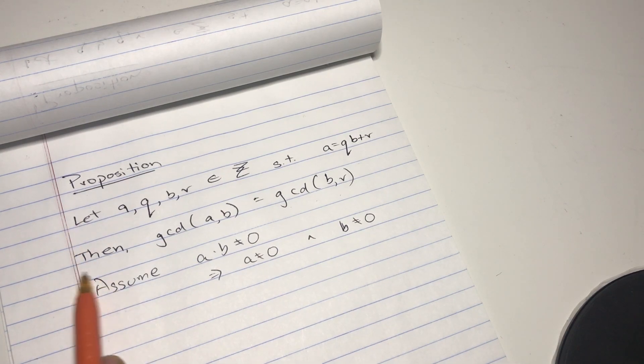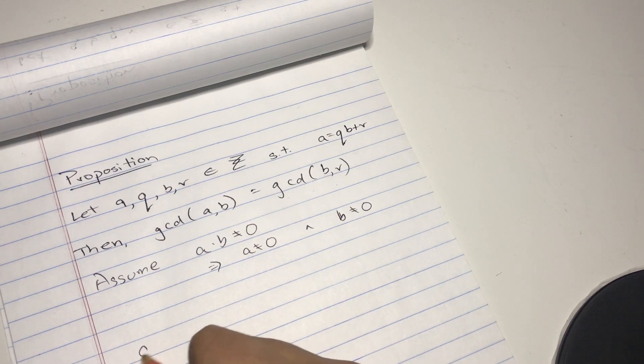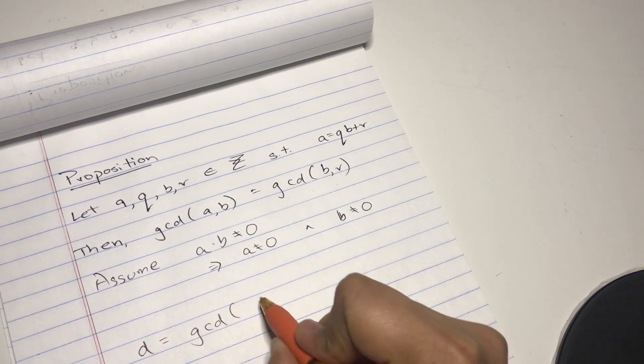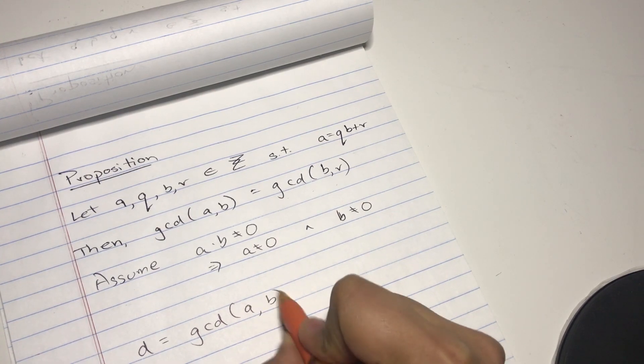By the way, this actually is very important in the Euclidean algorithm. But yeah, let's get started. So let's say we do have an integer d which is the greatest common divisor of a and b.